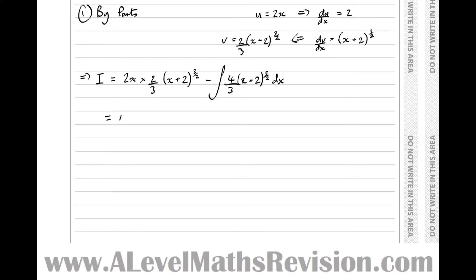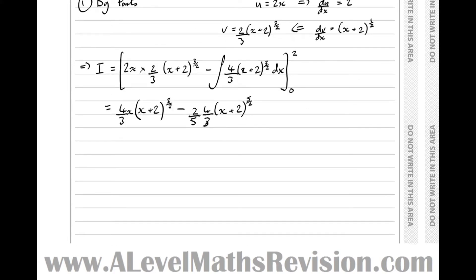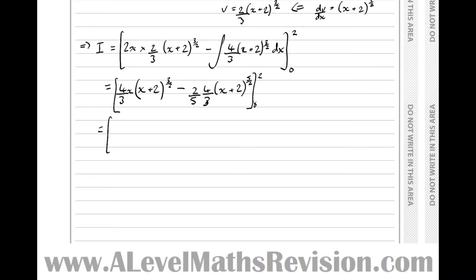Simplifying and integrating: we have 4 thirds x times (x plus 2) to the 3 over 2, then integrating the remaining term — add 1 to the power to get 5 over 2, so 4 thirds (x plus 2) to the 5 over 2 divided by 5 over 2, which is the same as multiplying by 2 fifths. Don't forget to add the limits 2 and 0. Simplifying: 4 thirds x (x plus 2) to the 3 over 2, take 8 over 15 times (x plus 2) to the 5 over 2, all between 2 and 0.